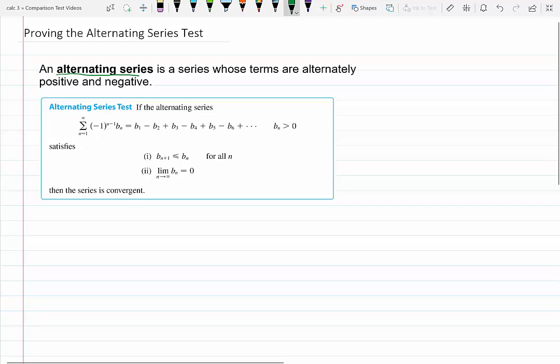Remember that an alternating series is a series whose terms are alternately positive and negative. One example of an alternating series that we examined in the prior video was the alternating harmonic series, negative 1 to the n minus 1 over n.